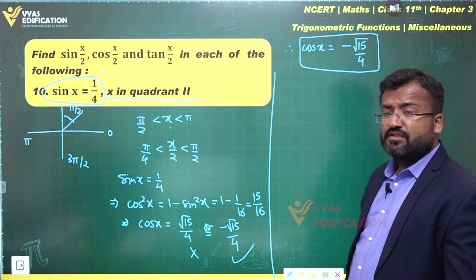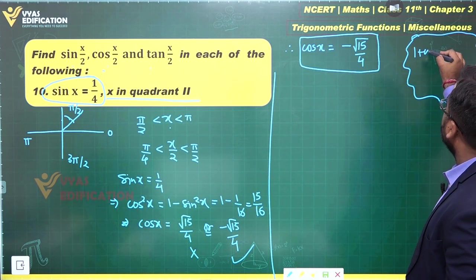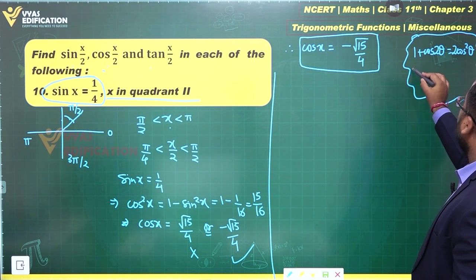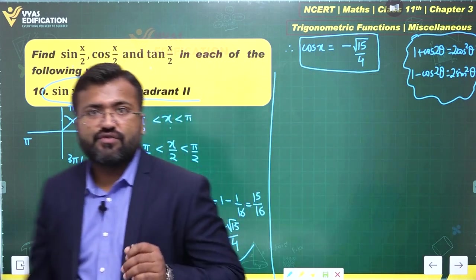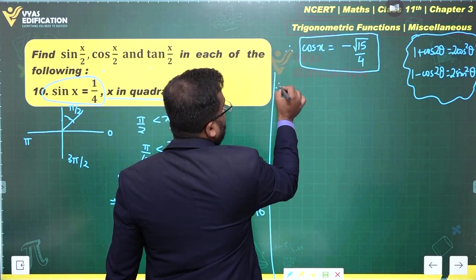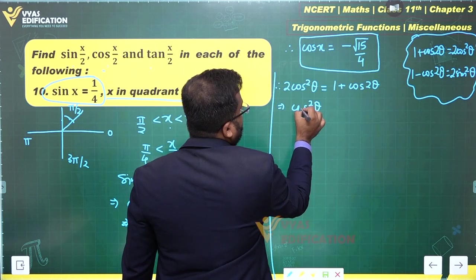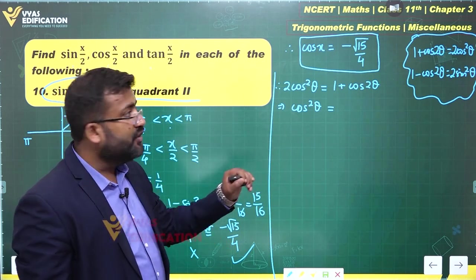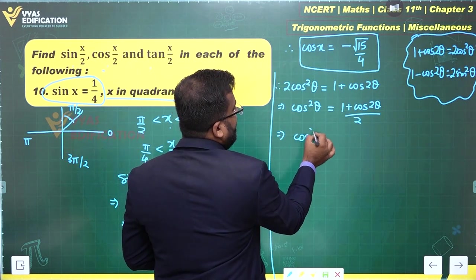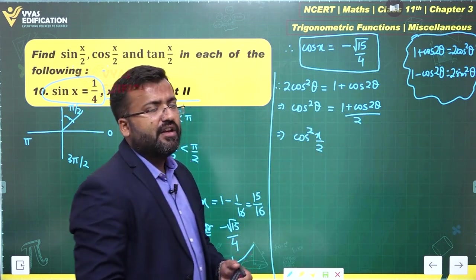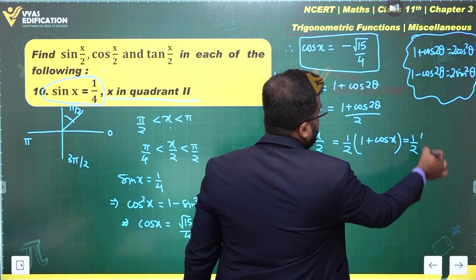We were asked for cos(x/2), not cos(x). Using the half-angle formula: 1 + cos(2θ) = 2cos²(θ), we get cos²(θ) = (1 + cos(2θ))/2. Substituting θ = x/2, we get cos²(x/2) = (1 + cos(x))/2.